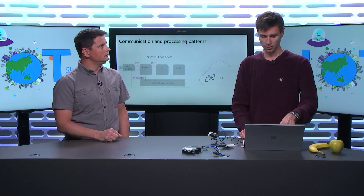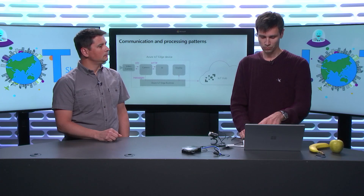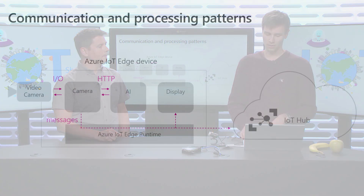The messages that we'll be sending will be the output of our AI model, which is typically just a small JSON blob — the results of the processing, whether an object has been detected or not.